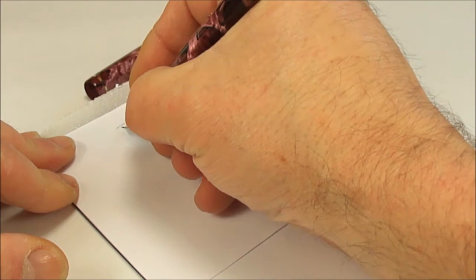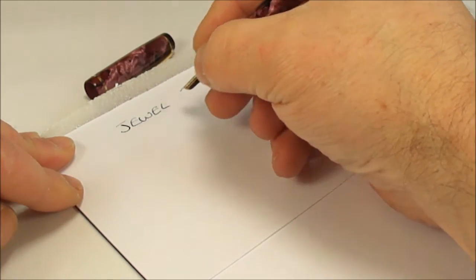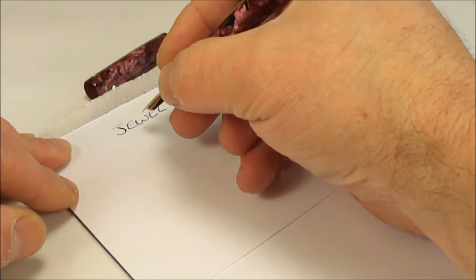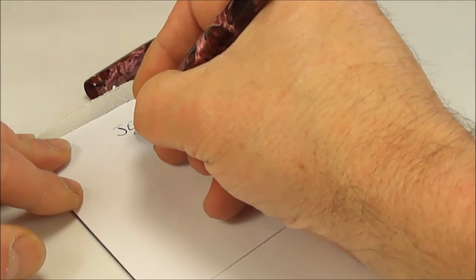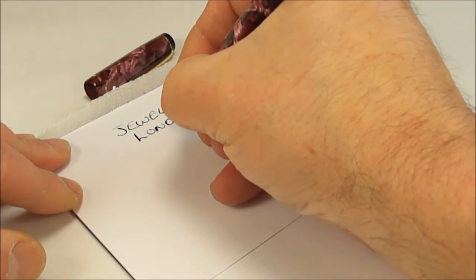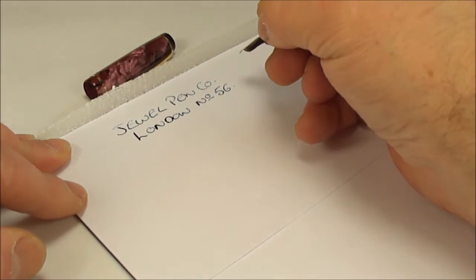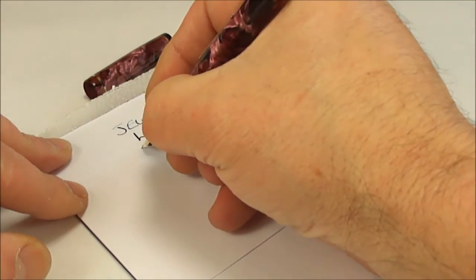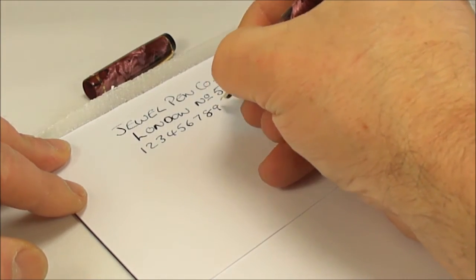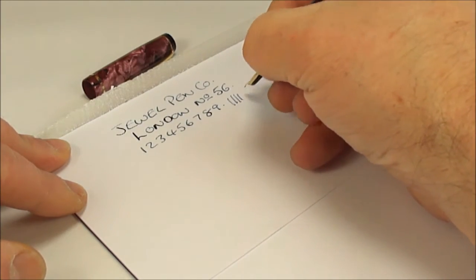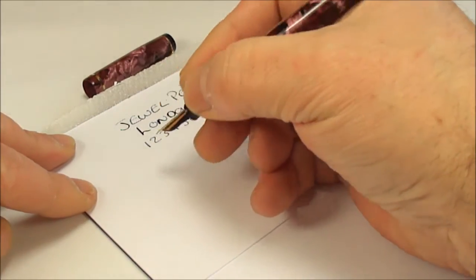What we have is a Jewel fountain pen, made by the Jewel Pen Company from London. The number of this particular model is the 56. As I'm writing, I'm not putting a lot of pressure on - it's writing very nicely. First and foremost, I would say it's writing with a fine line.